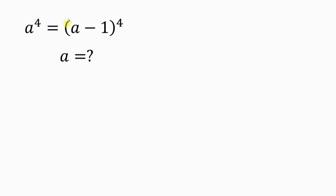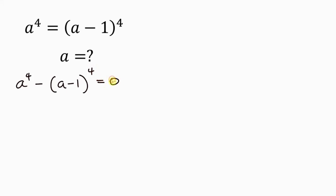Let's go. Our first step would be for us to move the right hand side to the left hand side. So we have a to the power of 4, and as this crosses it becomes minus a minus 1, raised to the power of 4, and this is equal to 0.